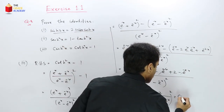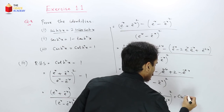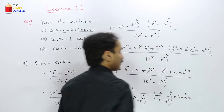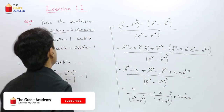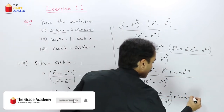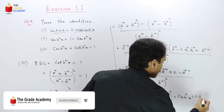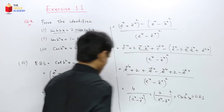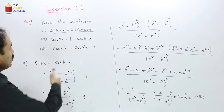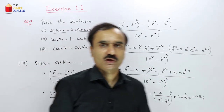So coth²(x) − 1 = csch²(x), equal to the left-hand side. All three hyperbolic identities are now proved.